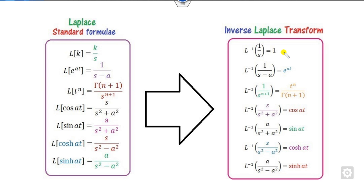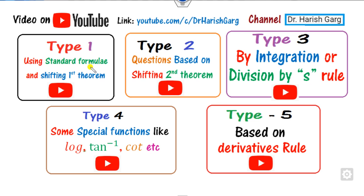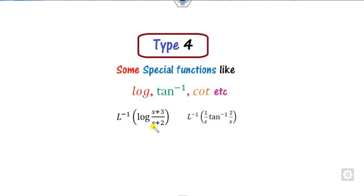These are some standard Laplace formulas and the corresponding inverse Laplace transformations that we have discussed in our previous ones. So far we have discussed Type 1 - shifting first theorem based quotients, shifting second theorem based quotients, and the last part was on division by t rules. And now we will see some special kinds of functions like logarithm, tan inverse, cot inverse, etc., and how you can find the Laplace inverse of these.